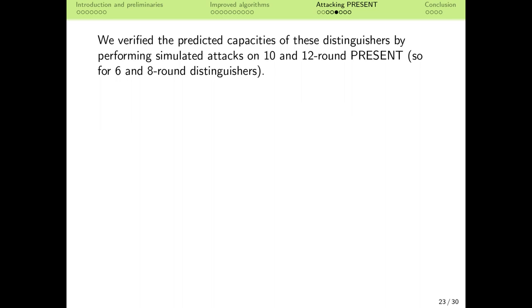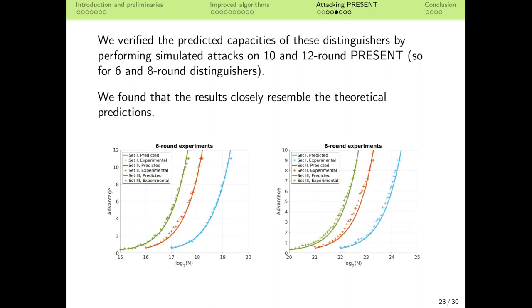Our theoretical predictions of the properties of these distinguishers were evaluated experimentally by simulating the key recovery attacks on 10 and 12-round PRESENT — that is, testing the properties for 6 and 8-round versions of the distinguishers. We were happy to find that the experimental results closely follow the predictions of the statistical models of linear cryptanalysis, so we are fairly confident that our predictions for the larger number of rounds will still hold.